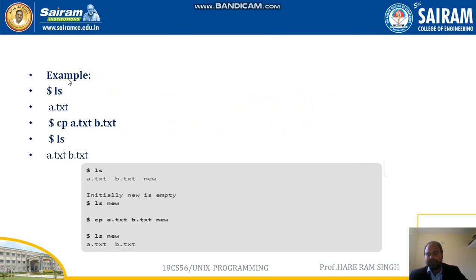For example, suppose we have ls showing a.txt and we want to create a copy. We type 'cp a.txt b.txt'. Running ls afterwards shows that b.txt has been created alongside a.txt. To copy both a.txt and b.txt into a directory called new, we use that as the next example.